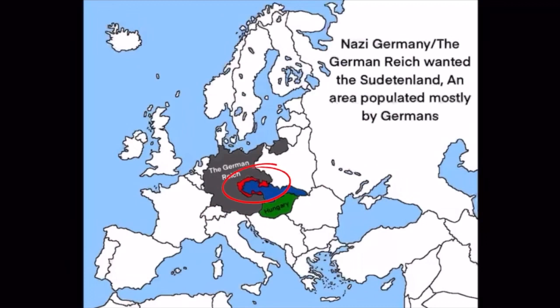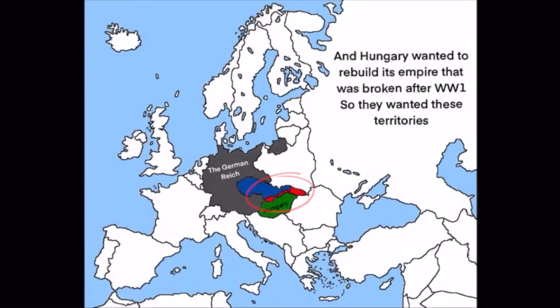Nazi Germany, slash the German Reich, wanted the Sudetenland — an area mostly populated by ethnic Germans. And Hungary wanted to rebuild its empire that it lost after World War I, so they wanted these territories.